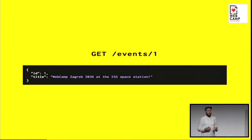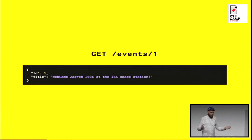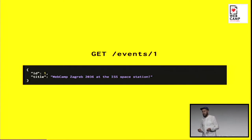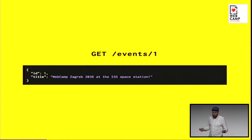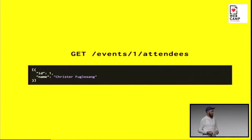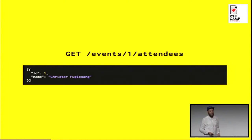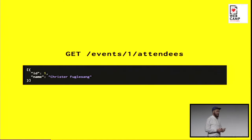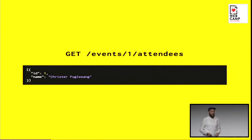The naive approach when you start to design an API could look something like this. Say we're designing an API for events. This could be our endpoint if we want to fetch one event. We make a GET request to events slash one, we get back some JSON — we have an ID, we have a title. We can use this in our page displaying our event. But then, say we want to also display attendees on this page — no problem, we add a new endpoint, like event slash one slash attendees, which gives us all the attendees for the event.